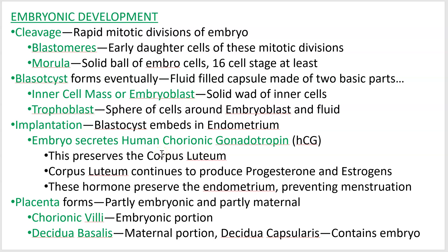The corpus luteum is the structure that produces a lot of progesterone especially, and also estrogens. Those two hormones are what maintain the endometrium. If you can keep that endometrium going for nine months, you can keep a baby going for nine months. The placenta forms shortly after.